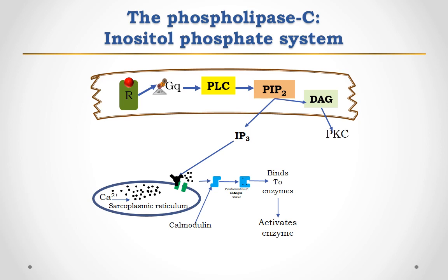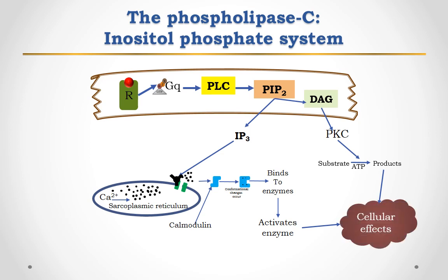The other second messenger synthesized from PIP2 is diacylglycerol (DAG). Diacylglycerol activates a phospholipid and calcium-sensitive protein kinase C, which then phosphorylates specific proteins, such as enzymes and substrates, leading to the cellular response. In this way, both IP3 and DAG, which are second messengers hydrolyzed from PIP2, are able to elicit cellular effects.